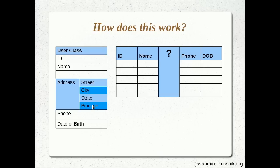The simplest way to do this is to have each of the member variables of the Address object inside the User class also have separate columns. What I mean is: the User class has an Address object, and the Address object has some member variables. We're going to treat those member variables the same way as member variables of the User class itself — as if street, city, state, and pin code are four other member variables of the User class.